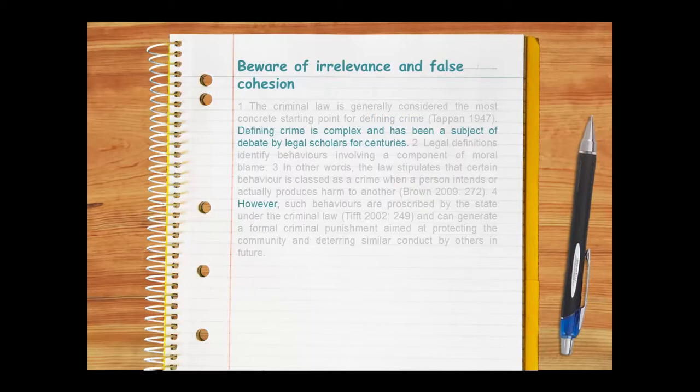There are two things, however, that can disrupt cohesion. Imagine, for example, if the writer included this extra sentence and this extra connective in the paragraph we've just looked at. The extra sentence contains information that detracts from the writer's main point. In the context of this paragraph, the sentence is irrelevant.